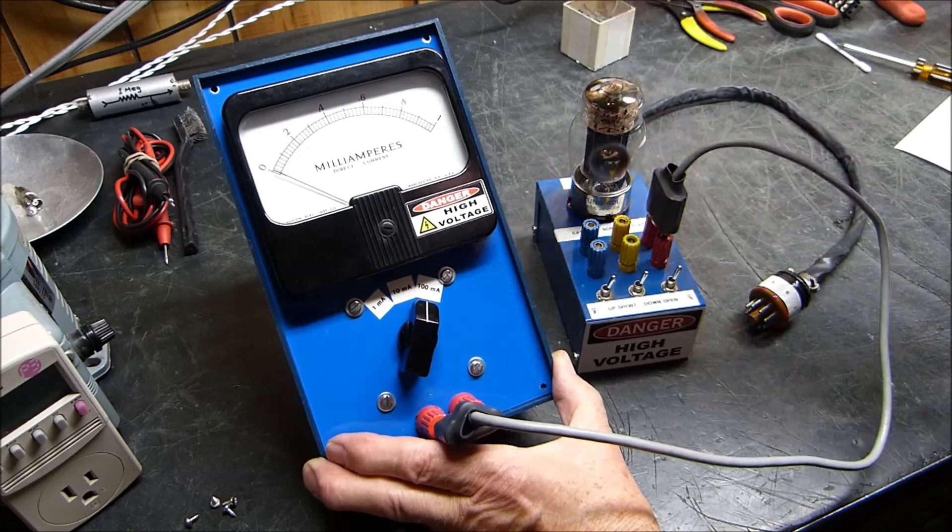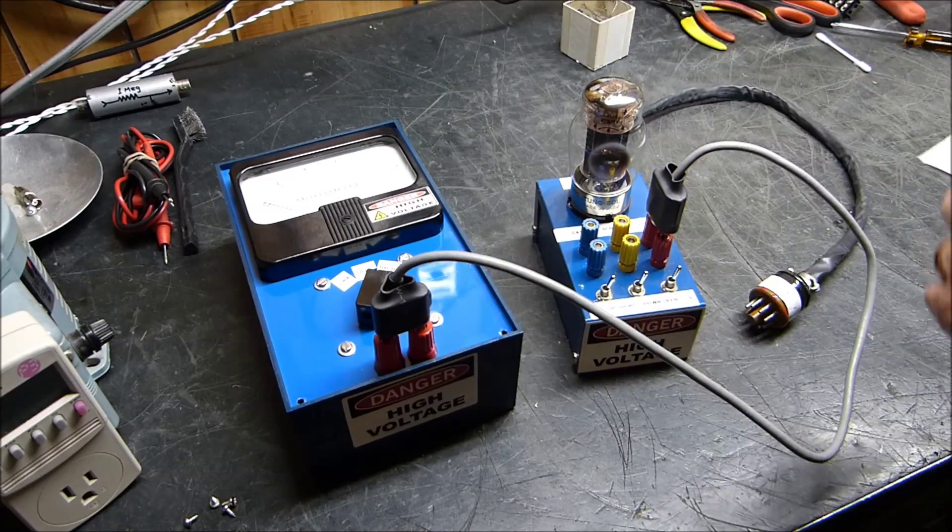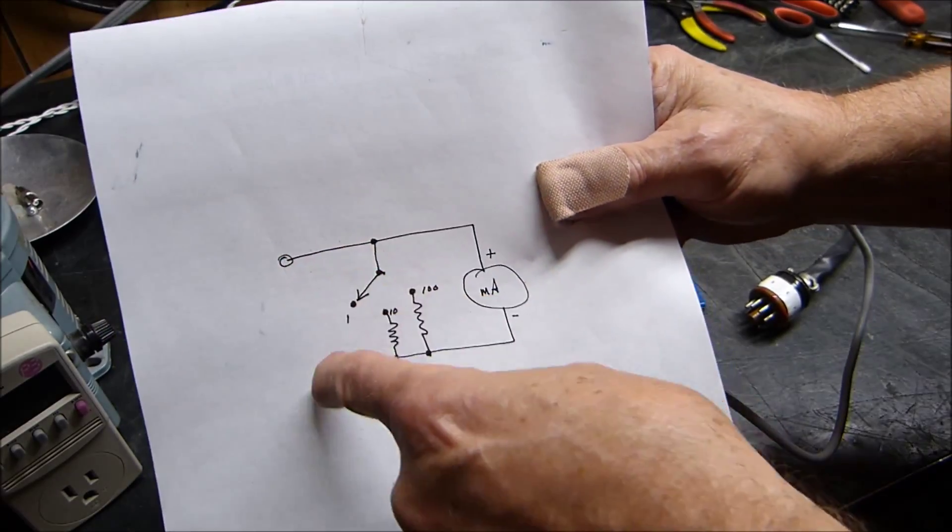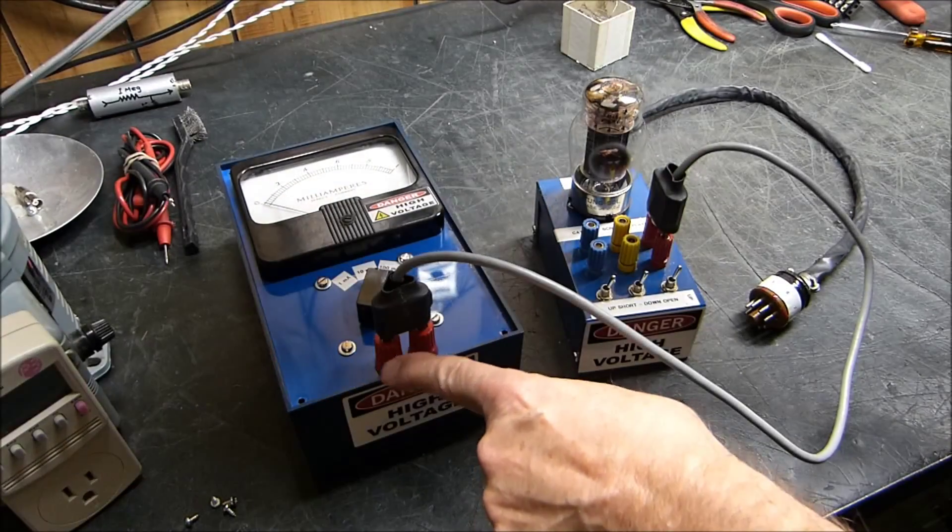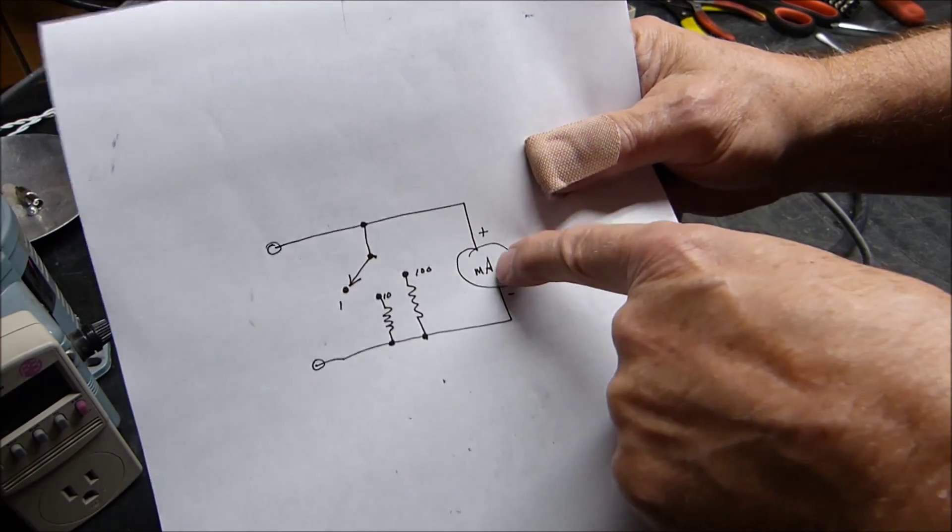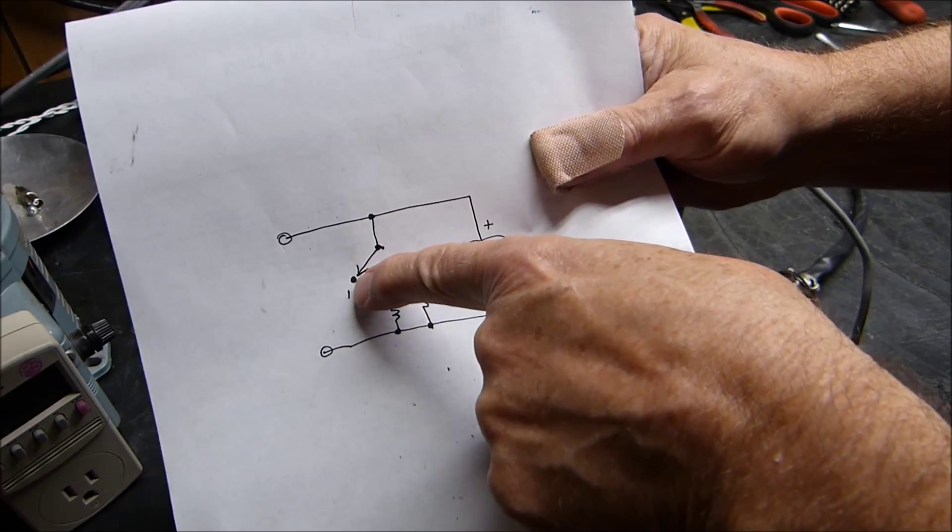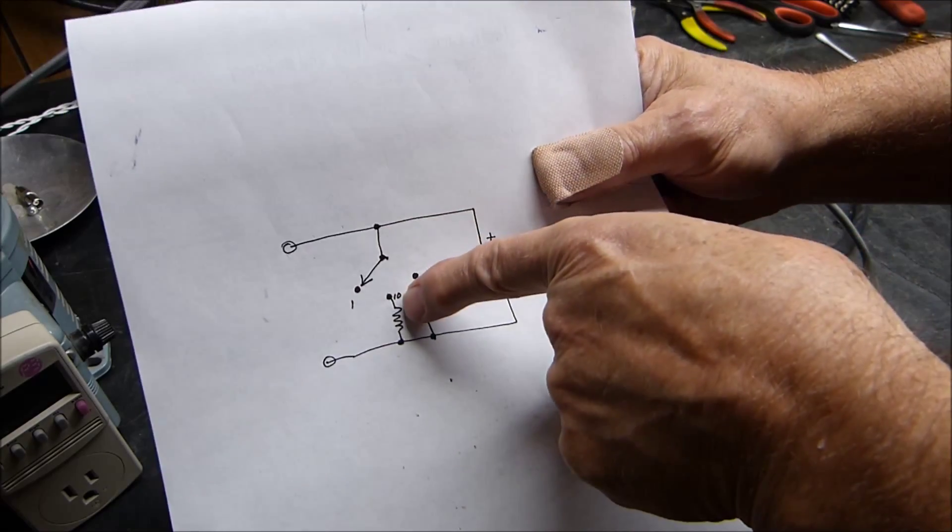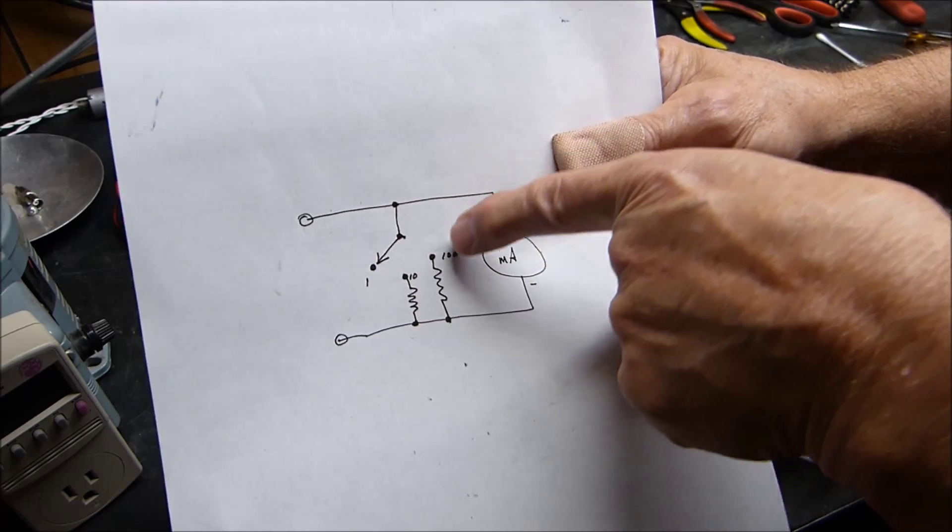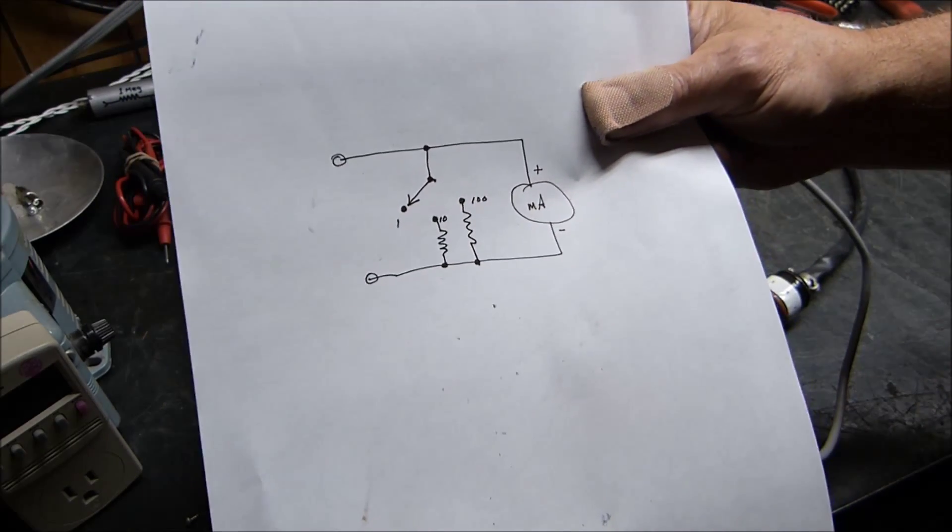Here's a schematic, very simple. Those are the two red leads right here, and there's that big switch. There's the meter. All it does is when it's in the first position there's no shunt across it, and then in the second position there's a shunt that gives it 10 milliamps full scale, and the second shunt will give you 100 milliamps full scale.